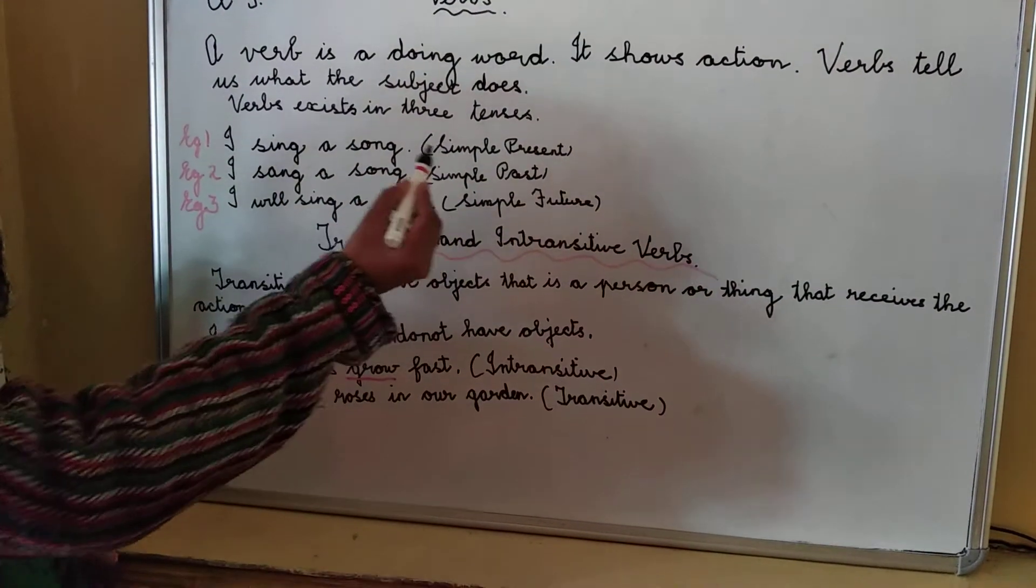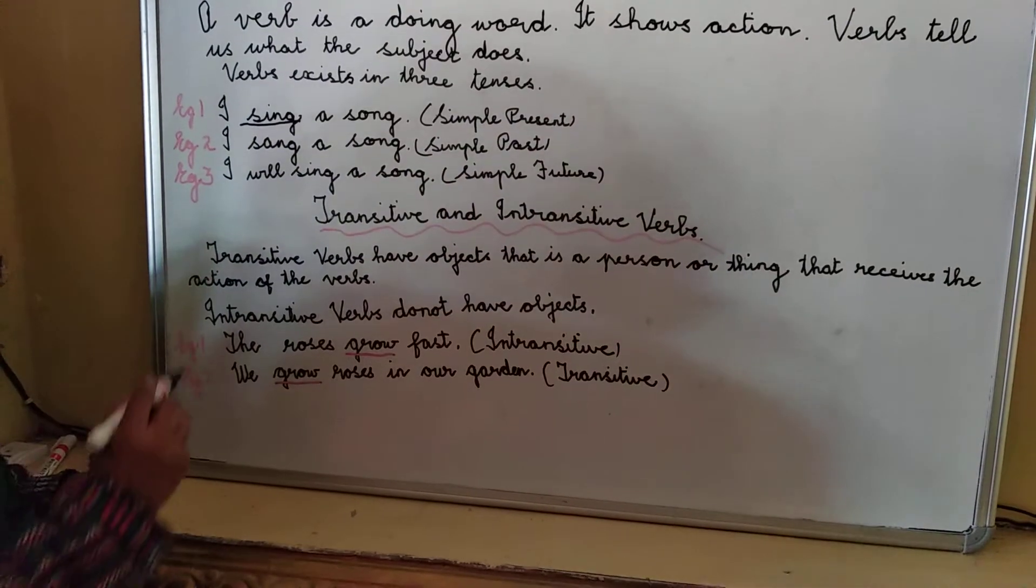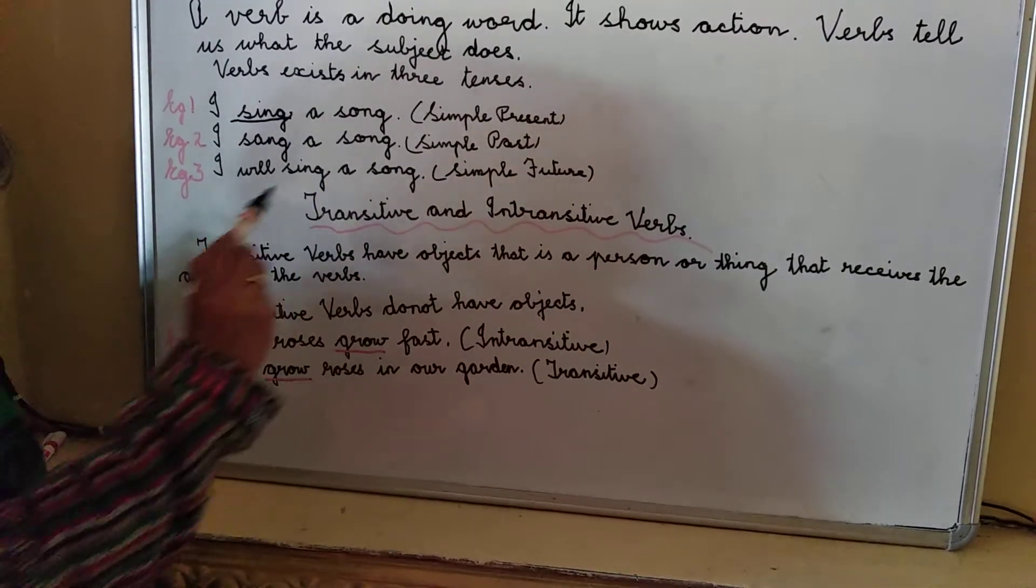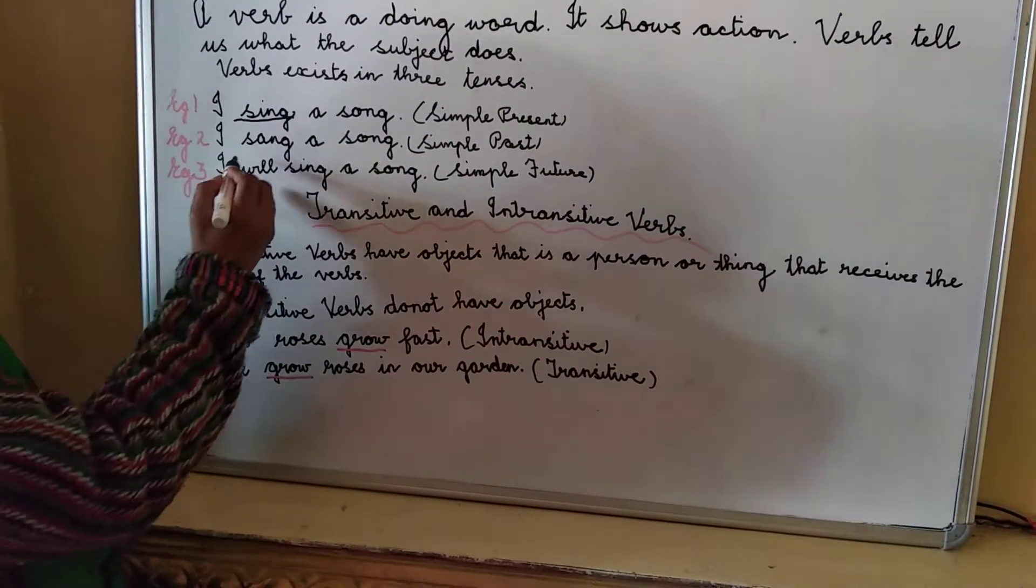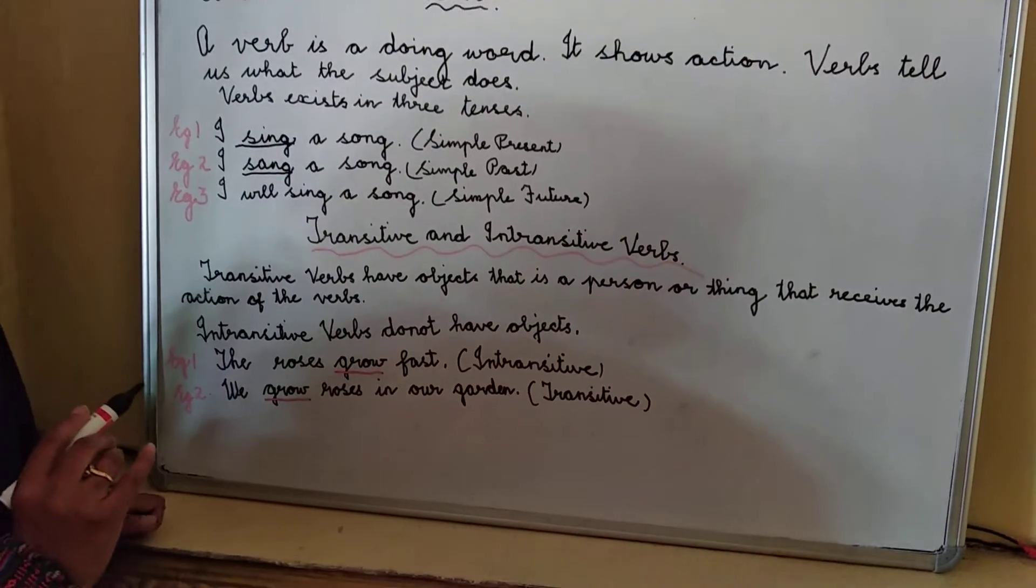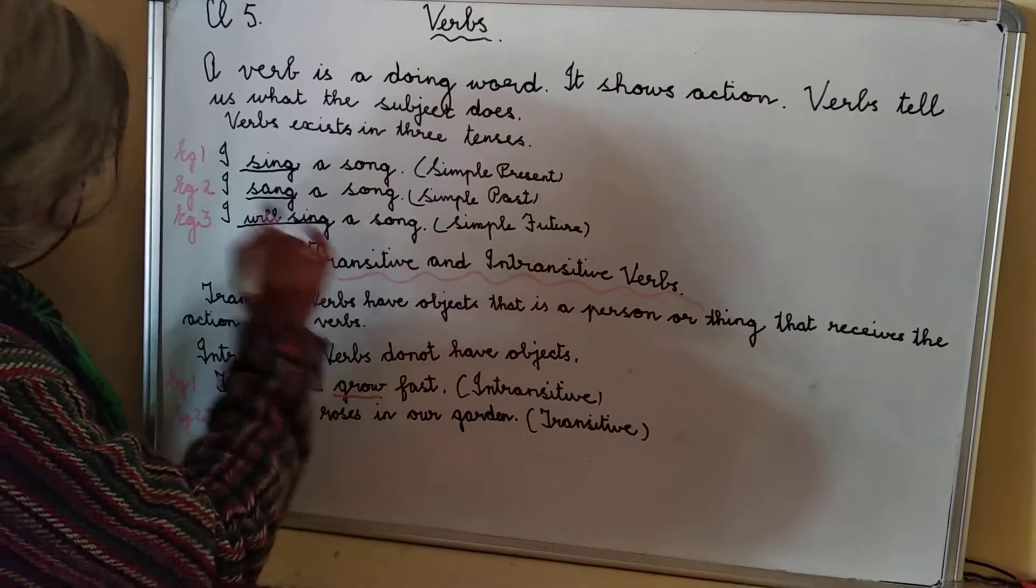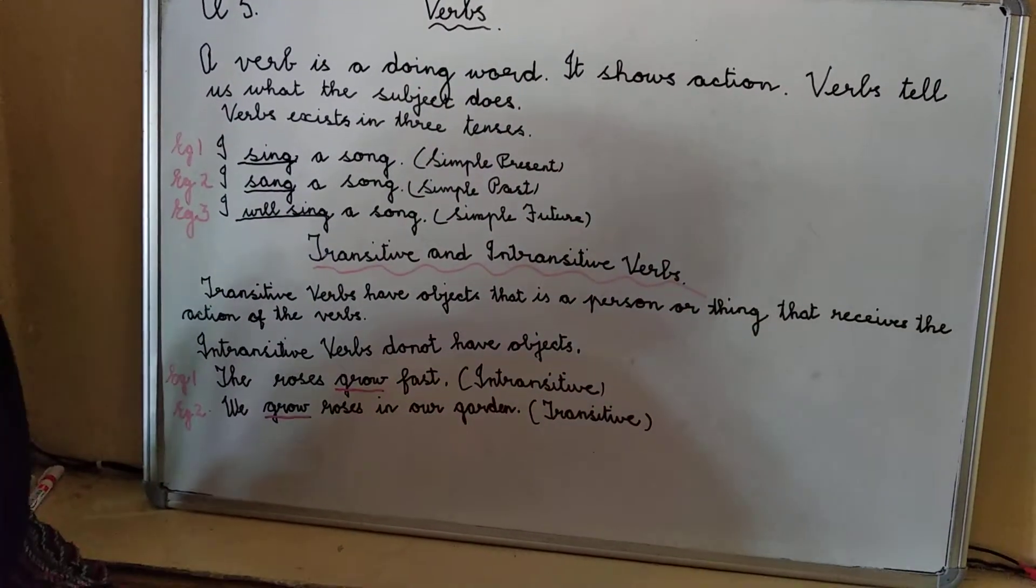I sing a song, that is simple present tense. What is the verb? Sing. I sang a song, that is simple past tense. And the third is I will sing a song, that is simple future tense. So these are the three tenses in which verbs exist.